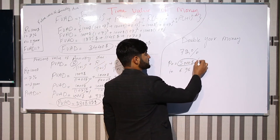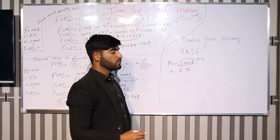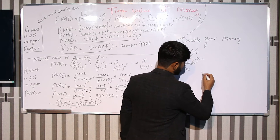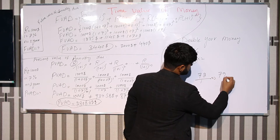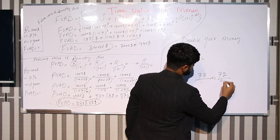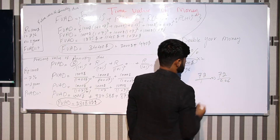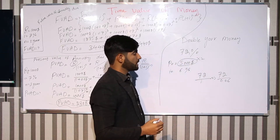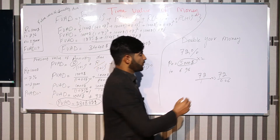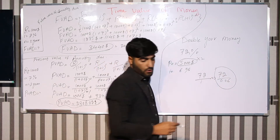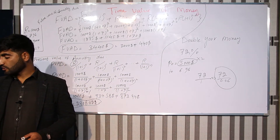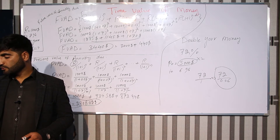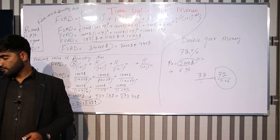You will learn about the Rule of 72: 72 divided by the interest rate. For example, 72 divided by 0.06. The value of 72 divided by 0.06.